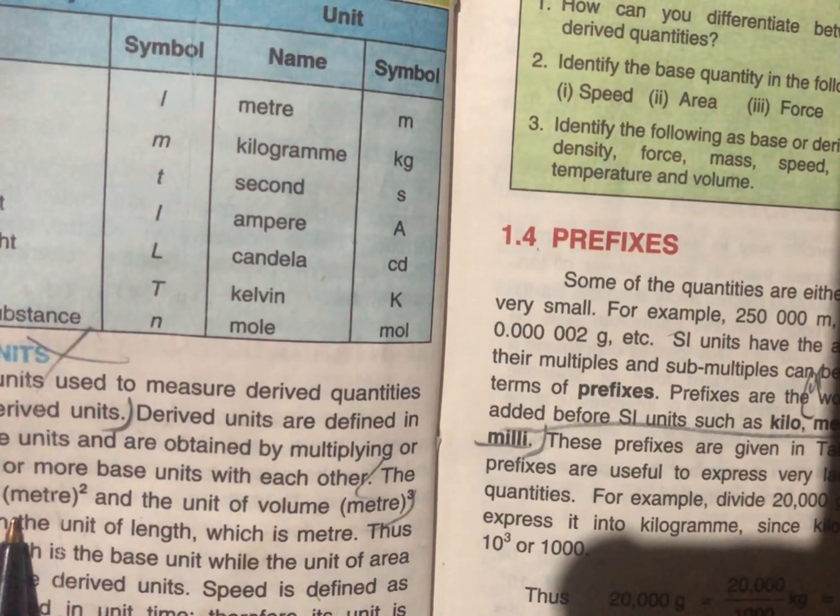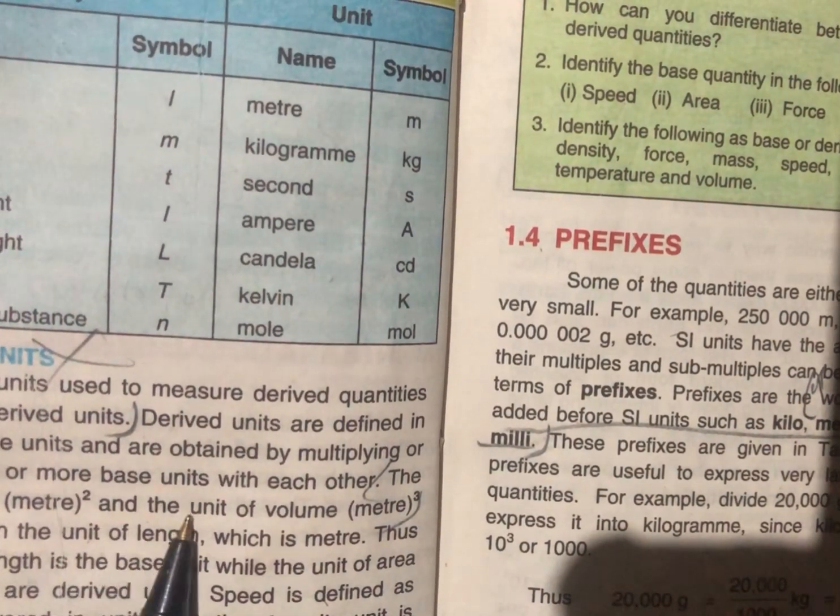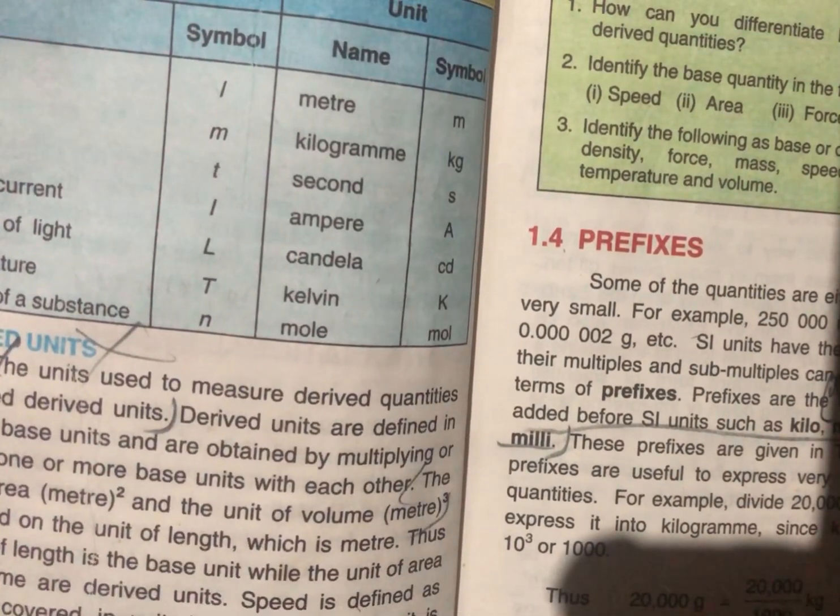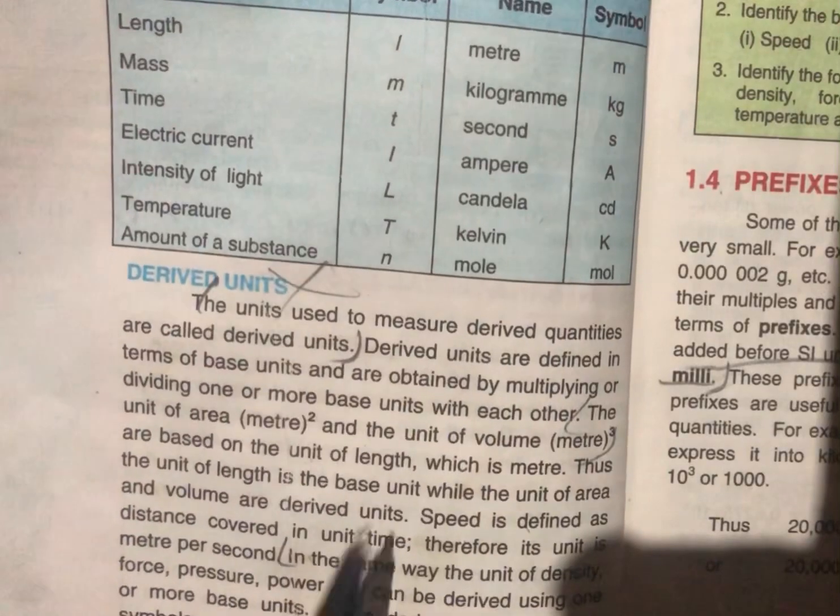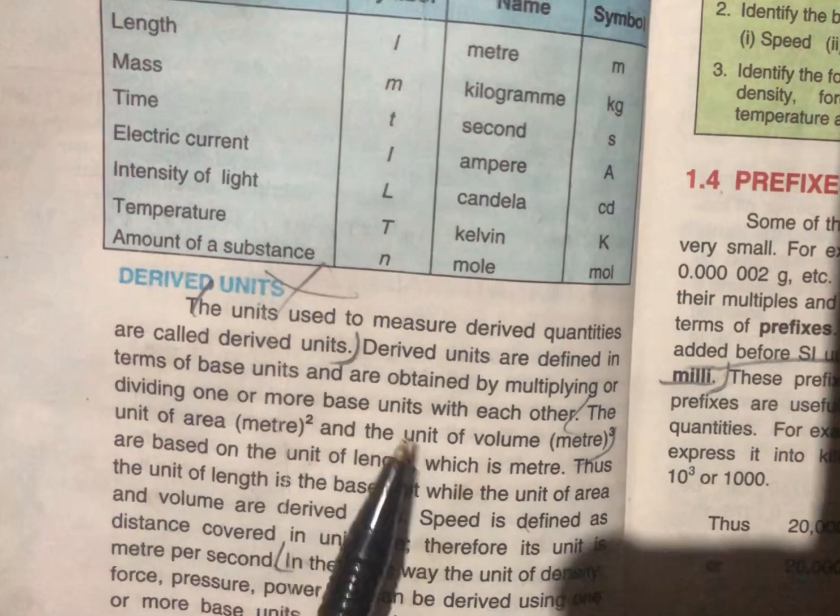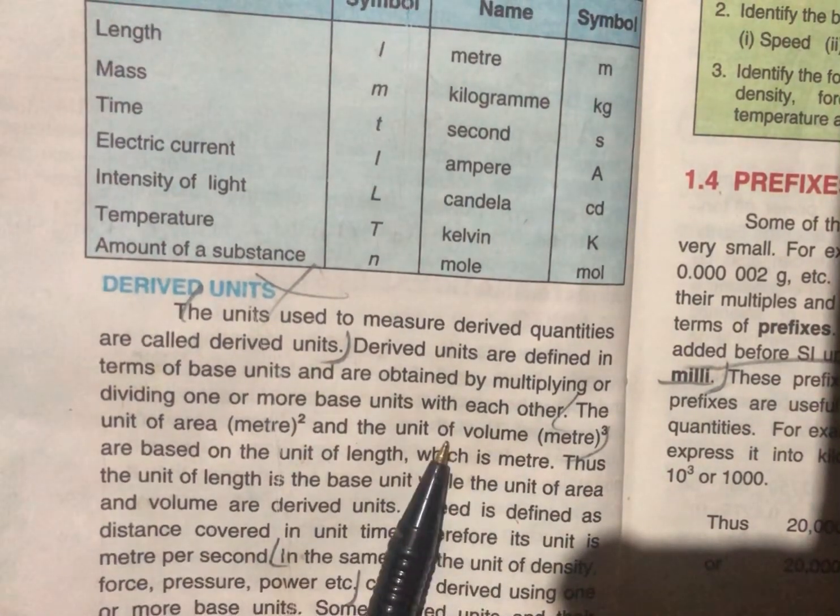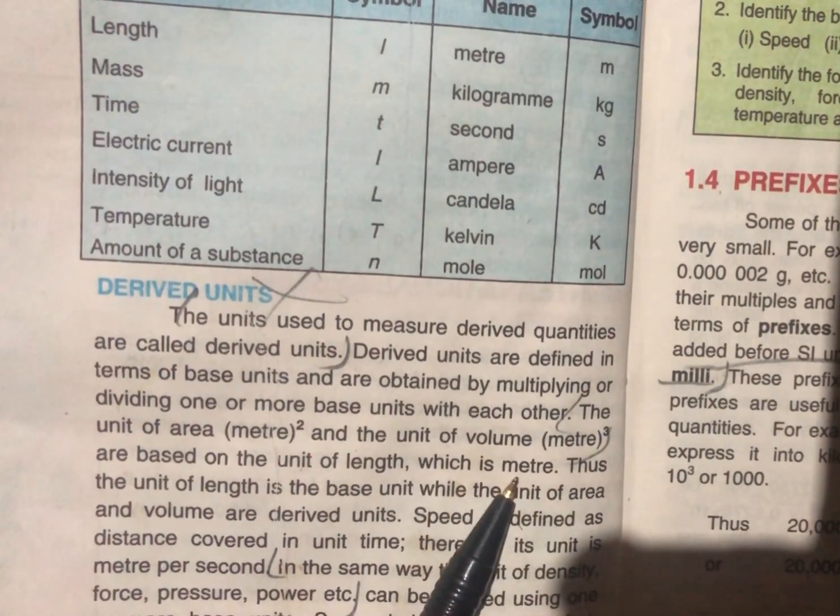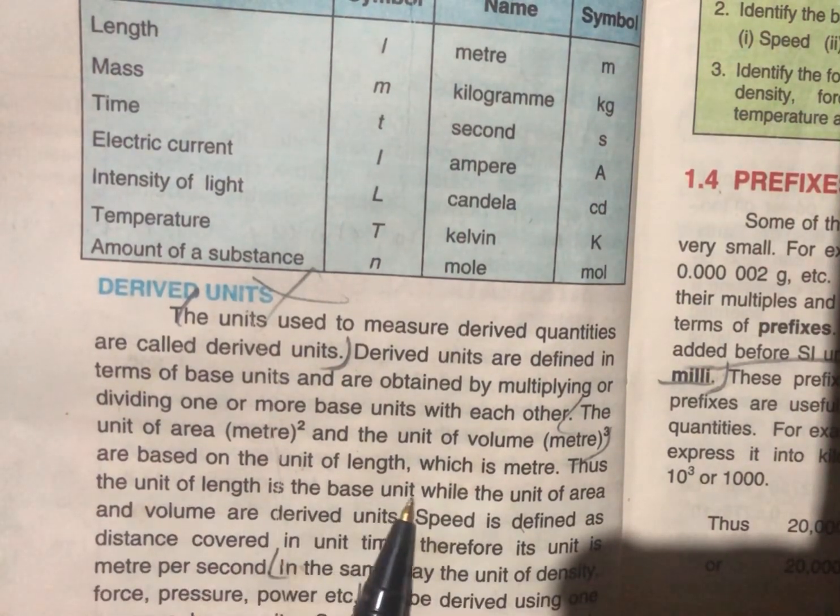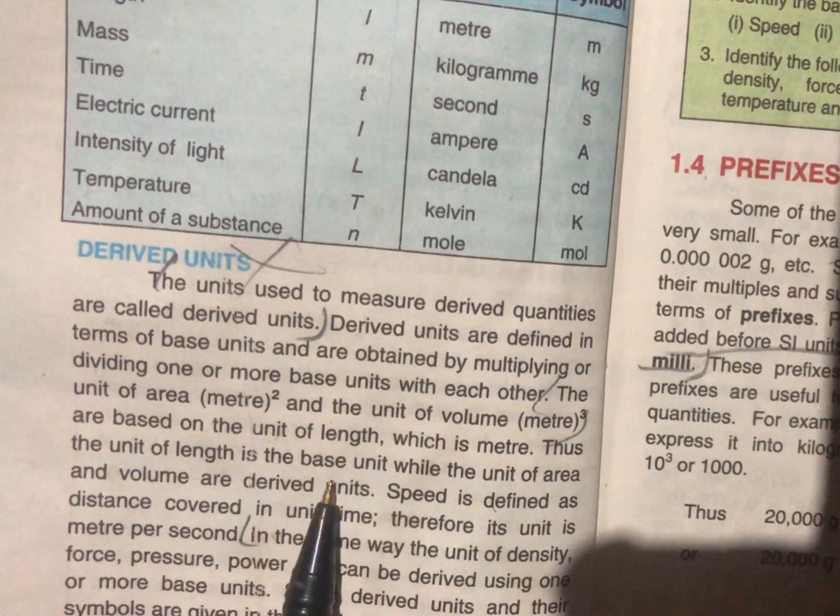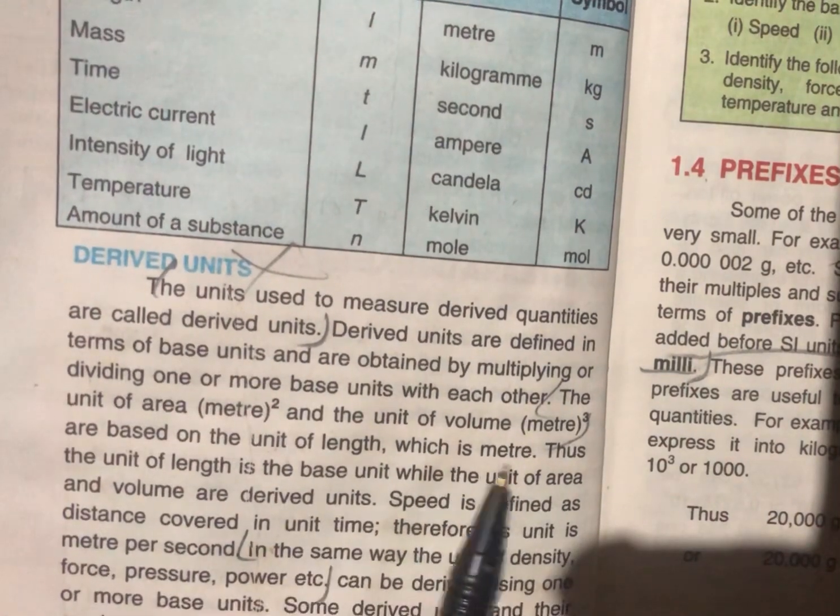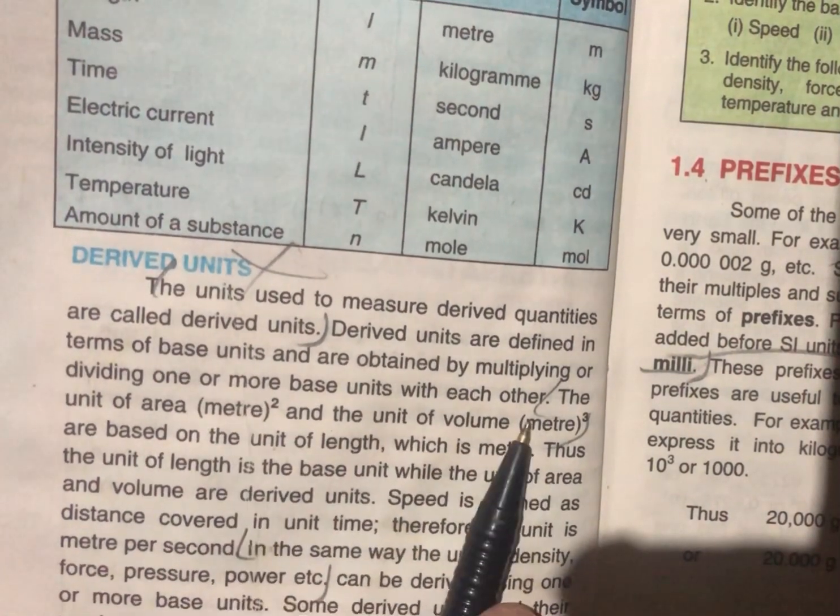The unit of area is meter square and the unit of volume is meter cube, based on the unit of length. Length is meter, but when we take area, the unit of length is the base unit while the unit of area and volume is the derived unit.